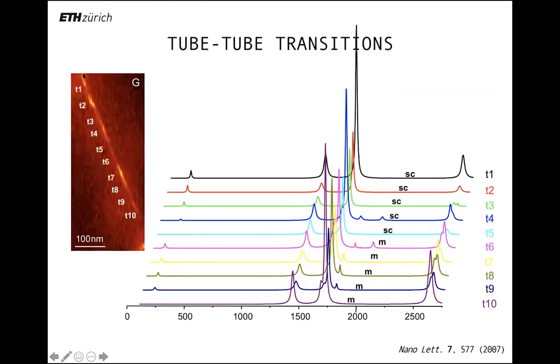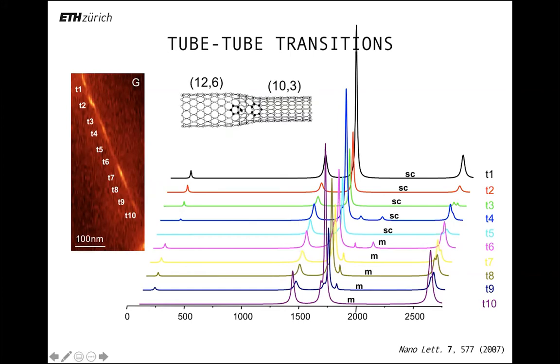We can go along nanotubes and try to understand what is happening locally. For example, in this case, we have a transition from a semiconducting to a metallic nanotube. This is seen because the radial breathing mode jumps from one value to another value. There's also a signature of this transition in this 2D band. I won't go into the details, but I want to highlight that a lot of information is contained in such Raman spectra. What we have here is indeed a transition from a semiconducting to a metallic nanotube.